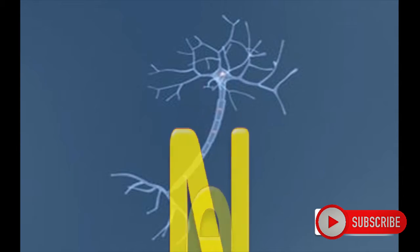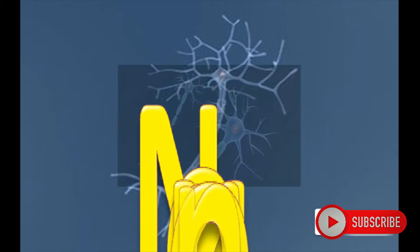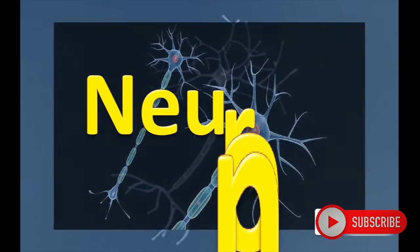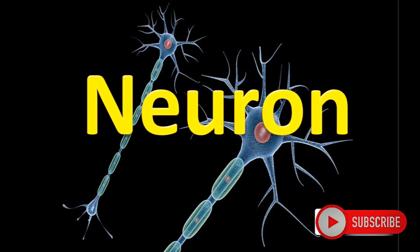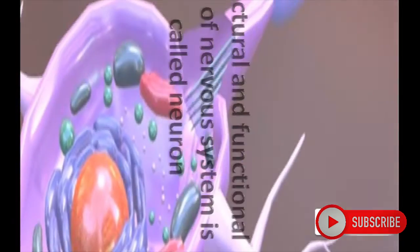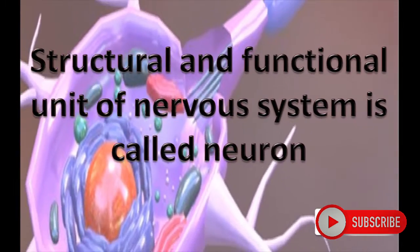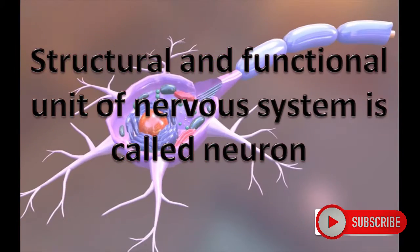Neuron. The structural and functional unit of the nervous system is called a neuron. It is a typical cell present in the nervous system.